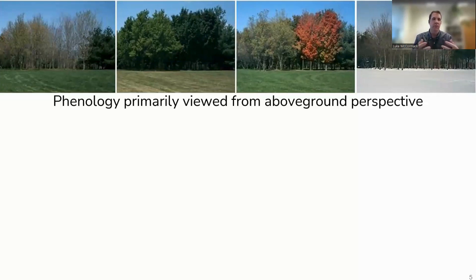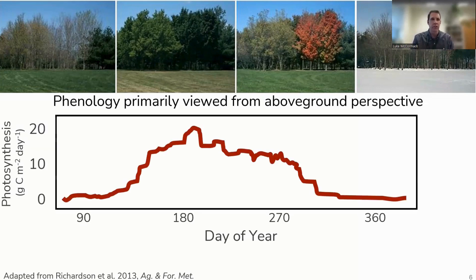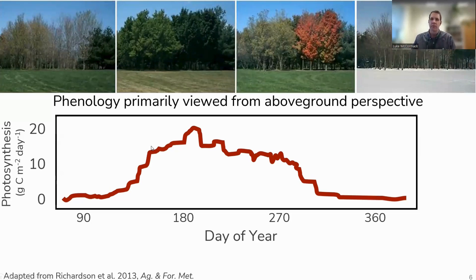When we talk about phenology broadly, there's a long history of research, but it's almost exclusively from an above-ground perspective — and not for bad reasons. Above-ground phenology is incredibly important for defining the productivity of ecosystems, especially deciduous ecosystems. Coming out of winter into spring, you have new leaf growth and photosynthesis really ticks up, then you have your growing season defined by the active leaf period, and senescence happens, then photosynthesis declines. This cycle is well recognized and certainly important.